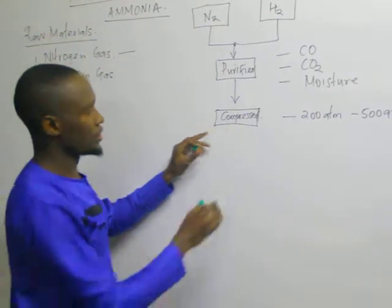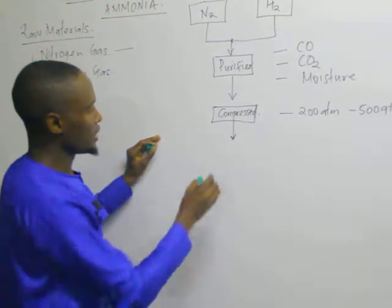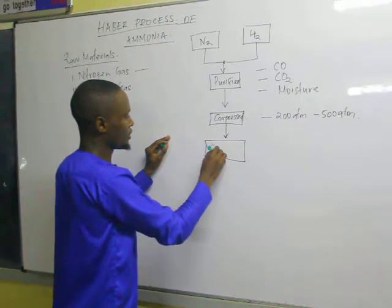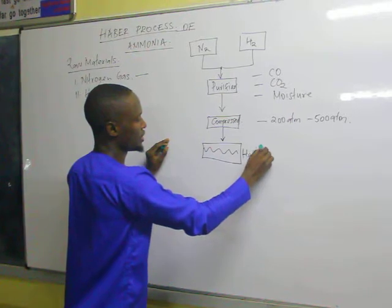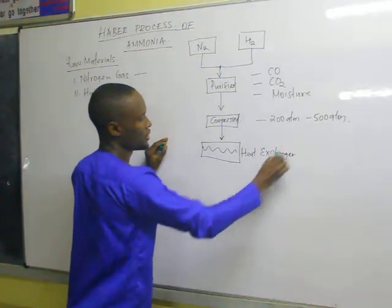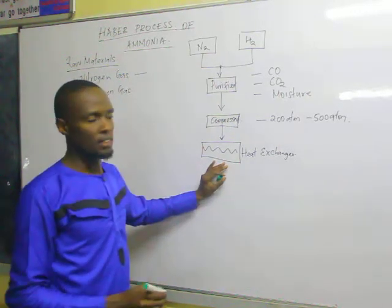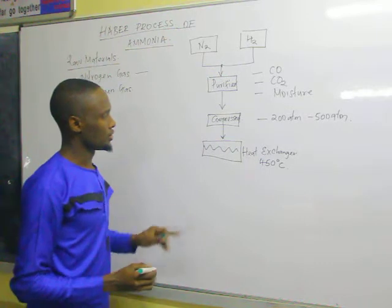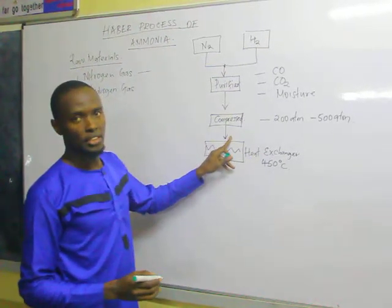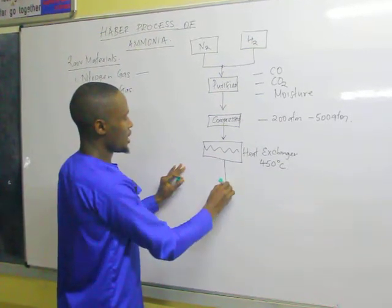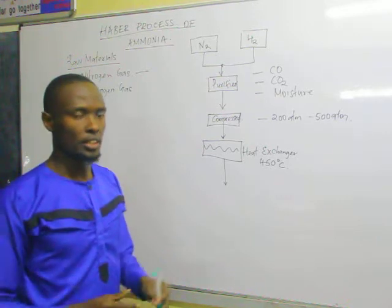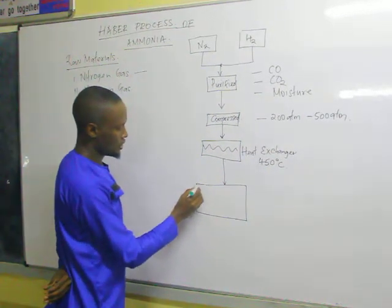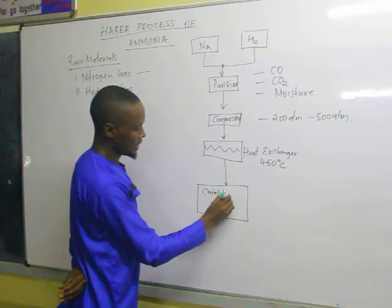After compression, the compressed gases are passed through a heat exchanger. At the heat exchanger, the temperature is maintained at 450 degrees Celsius. The two gases, nitrogen and hydrogen, are taken to the heat exchanger, and then the two hot compressed gases are taken to the reaction chamber, also called the catalytic chamber.